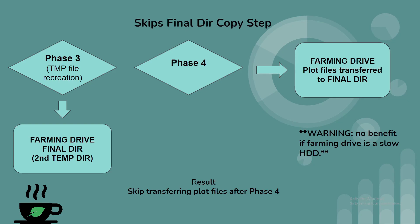However — and this is a big however — if your farming drive is a slow HDD, you're not going to see this benefit of skipping this step, because if it can't keep up with the transfer speed, then you're just prolonging Phase 3. So you're not going to see any benefit from skipping this.